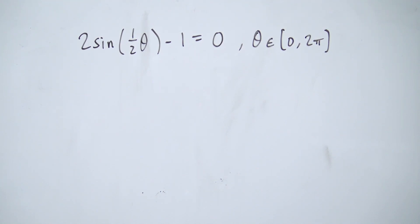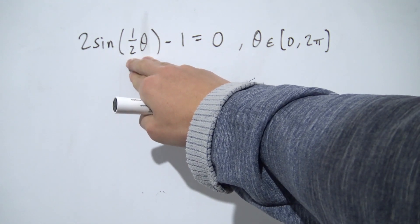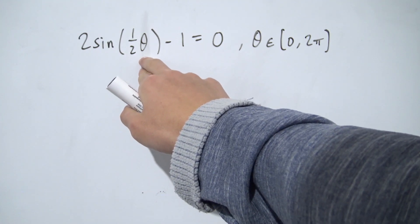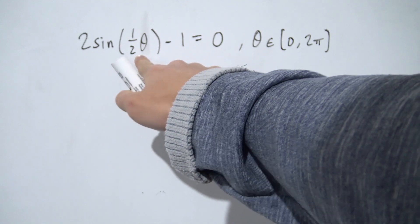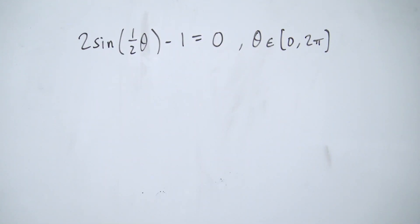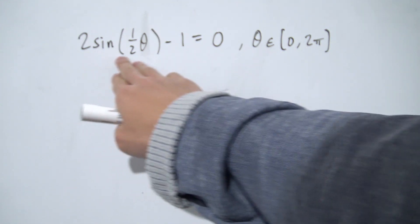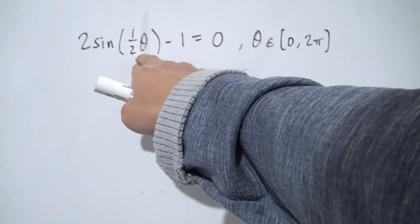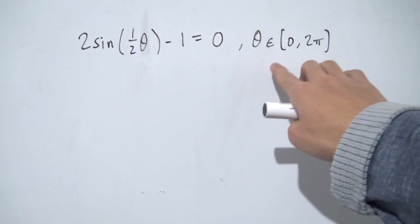Hello everybody. Today we're going to look at how we can solve some more complicated trig equations. You may notice one thing about these equations — namely the inside of our functions, the argument, because we no longer have a single angle in here. We might have some kind of scalar, or even a little shift as we'll see in the later example.